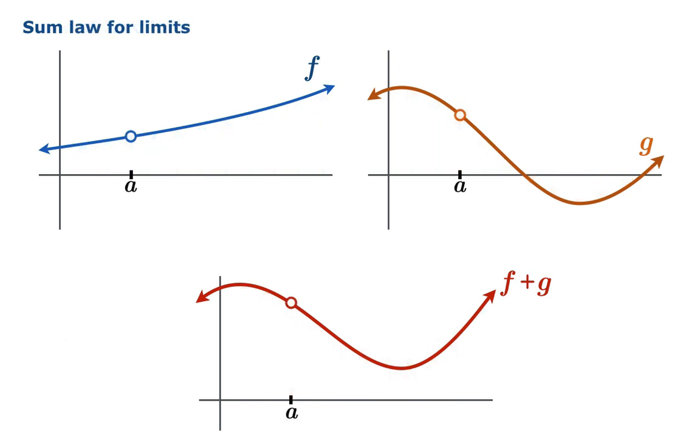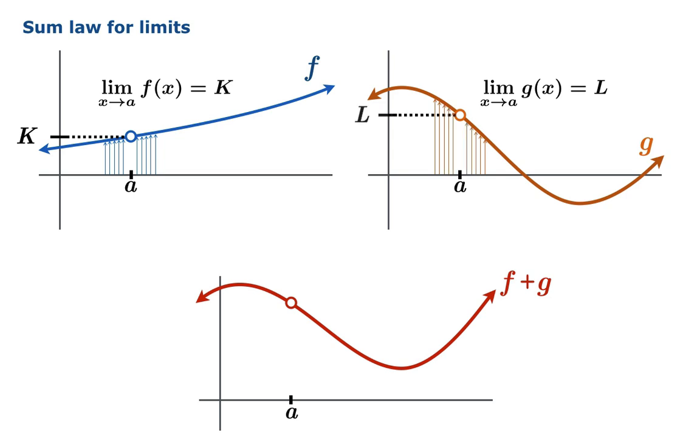Suppose we're interested in examining the limiting value of the sum of two functions. Suppose the limiting value of f as x approaches a is k, and the limiting value of g as x approaches a is l. And now we want to find the limiting value as x approaches a of the sum. We observe that the number k, the limiting value, is the limit of nearby function values. And similarly, this limiting value is the limiting value of nearby function values.